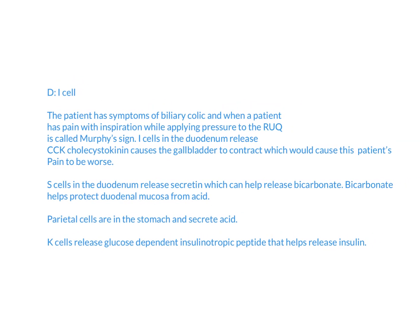It's typically going to be a woman in their 40s. You can have these symptoms, and especially on exam you can see Murphy's sign, which is where you have pain with inspiration while applying pressure to the right upper quadrant. For this question specifically, I-cells are in the duodenum, and they release CCK — cholecystokinin.